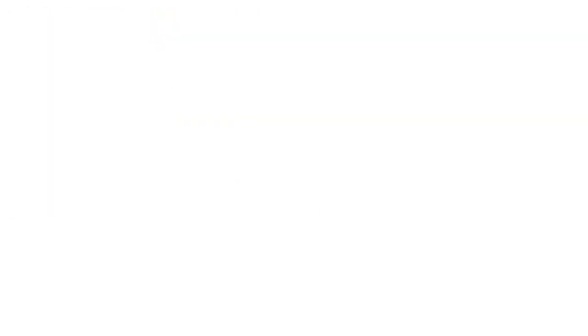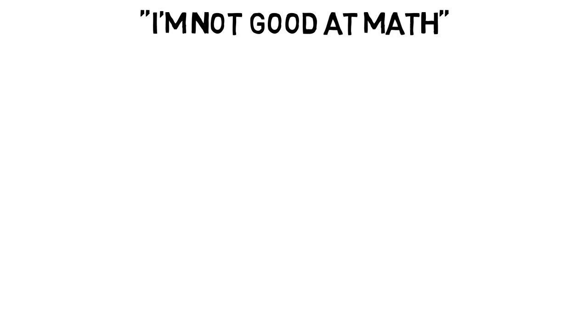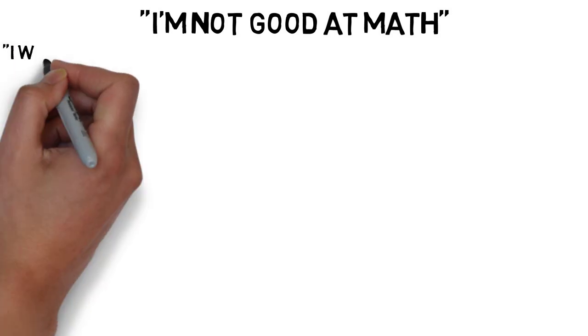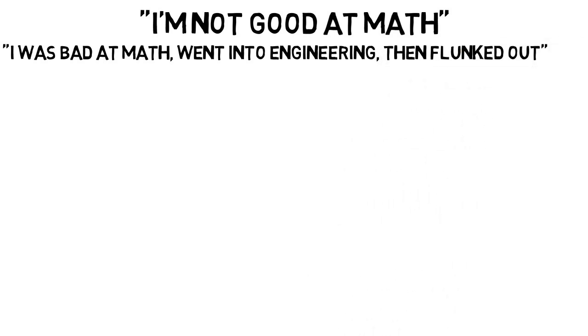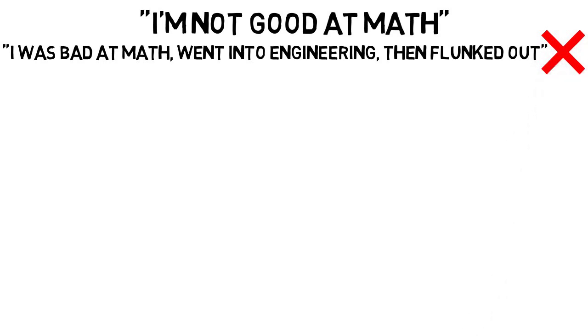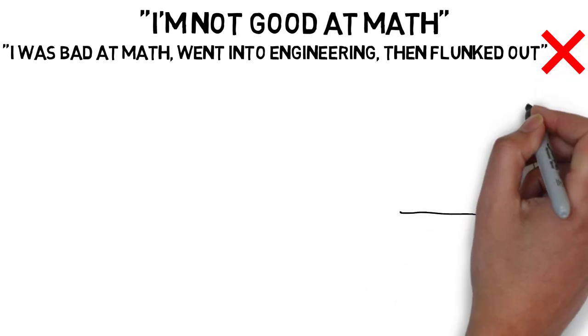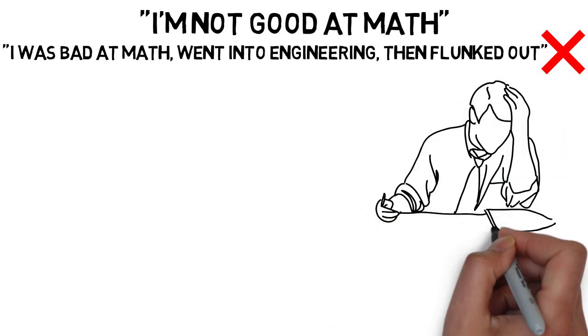The first hands down most common one I see is I'm not good at math. Now if what I was observing when I read comments and searched forums was I was bad at math, I went to engineering, and then I flunked out, I would tell you guys to consider other options if math is not your thing, but that's not what I've been observing. I've seen a lot of comments saying something along the lines of, I was not good at math at all, but I just put in a lot of effort to learn the math concepts and I ended up graduating in an engineering degree.